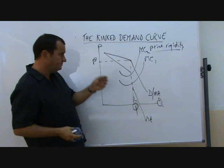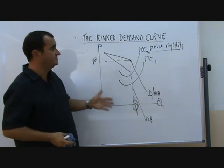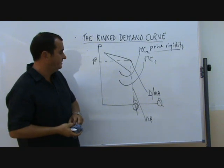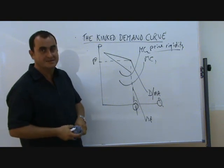So Paul Sweezy suggested that this was an explanation of why we see a lot of price rigidity in oligopolistic markets. I think it's a good theory. Does anybody else do the indexes? Stop. Thank you.